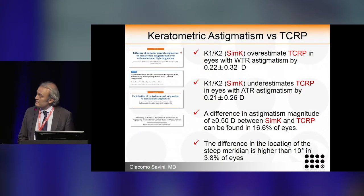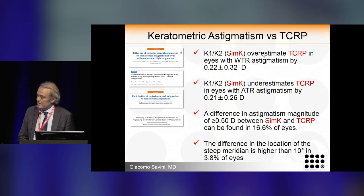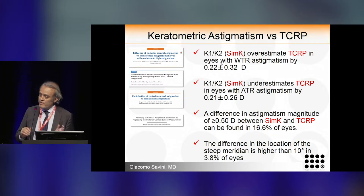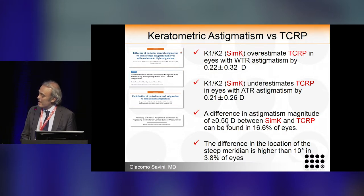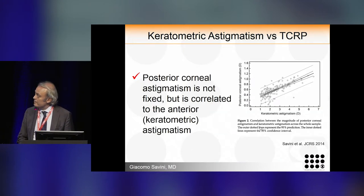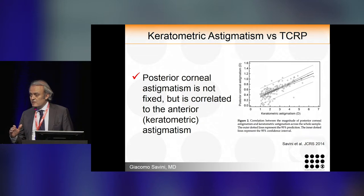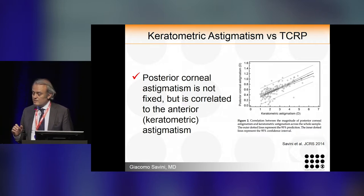Several studies have examined the difference between keratometric astigmatism and total corneal refractive power. We did one of these studies showing that the difference between the two is about a quarter of a diopter in both with-the-rule and against-the-rule eyes. A difference higher than half a diopter can be found in 16% of eyes, while the difference in axis is lower. However, using average values can be misleading because posterior corneal astigmatism is not fixed.